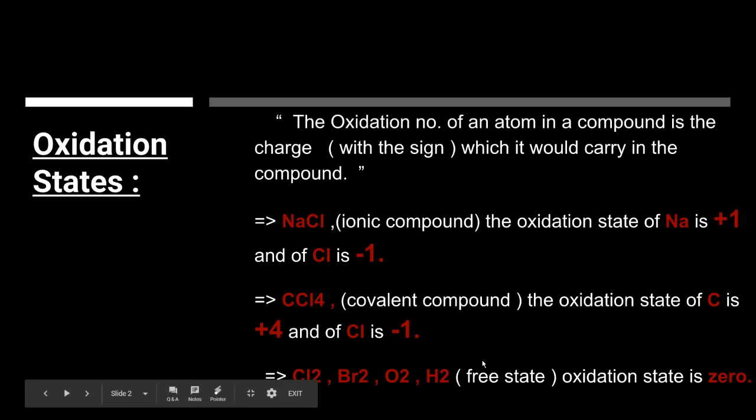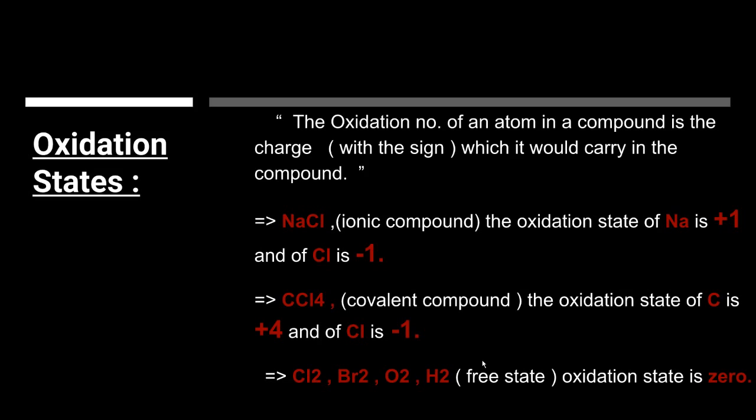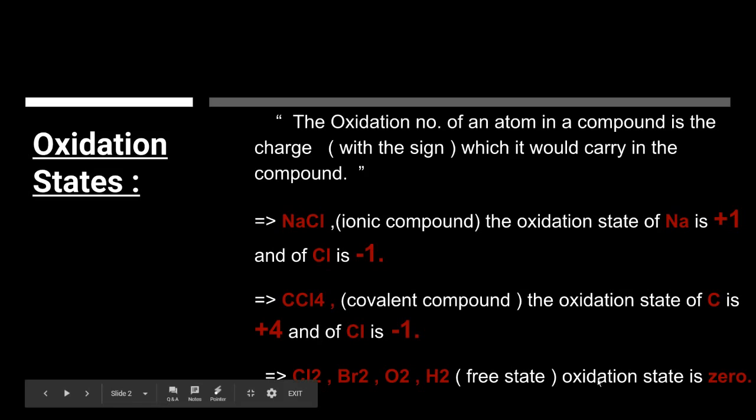Now, chlorine, bromine, oxygen, and hydrogen — Cl2, Br2, O2, H2 — they are in the free state. The free state refers to uncombined elemental atoms, whether they are lone, diatomic, or polyatomic, and the oxidation state shown by these is 0.